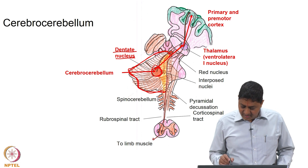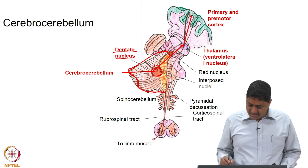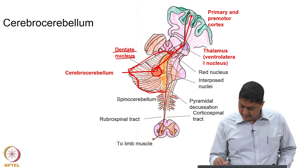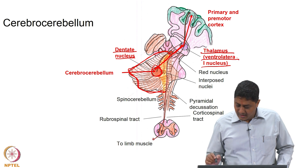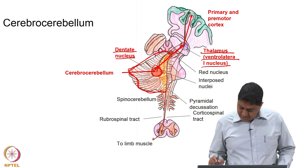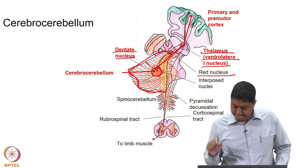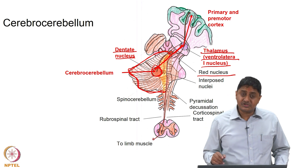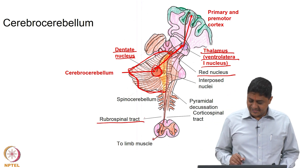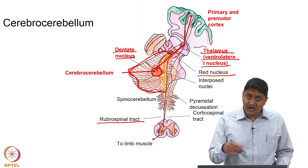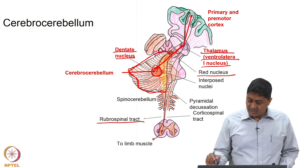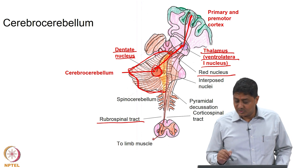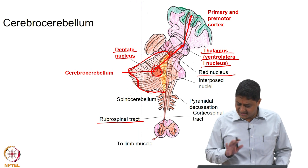From the dentate nucleus there are at least two projections: one is to the ventrolateral thalamus, and the other is to the red nucleus. From the red nucleus there is a projection to the spinal cord via the rubrospinal tract. From the ventrolateral thalamus, signals reach the primary and premotor areas, and from the cortex there is the corticospinal tract.